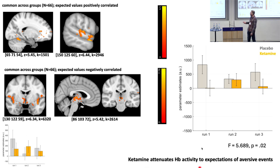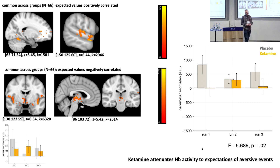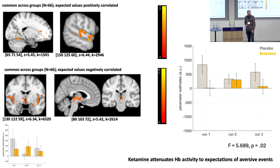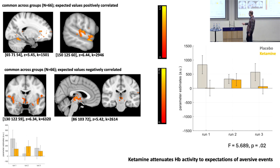Regions positively correlated with this regressor included the dorsal cerebellum and medial temporal gyrus. We were more interested in regions negatively correlated with the regressor, as that is the expected relationship for habenula. There we saw robust activity in bilateral insula and bilateral habenula, as anticipated. We then manually segmented habenula from participants' structural images and used these ROIs to extract the signal. This analysis revealed the main effect of ketamine attenuating the habenula signal to expectations of aversive events.